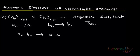Let's look at the second property of algebraic structure of convergent sequences. If you have a_n and b_n which are converging sequences, a_n converges towards a, b_n converges towards b, then a_n minus b_n will converge towards a minus b.